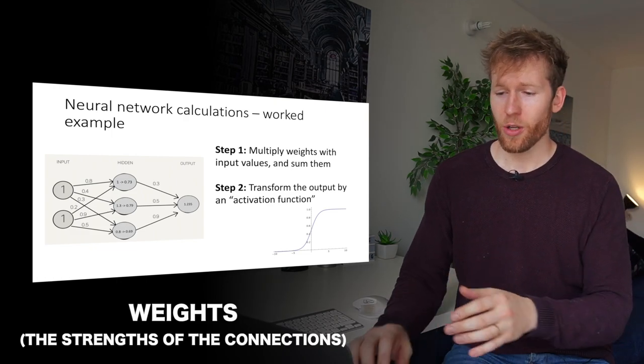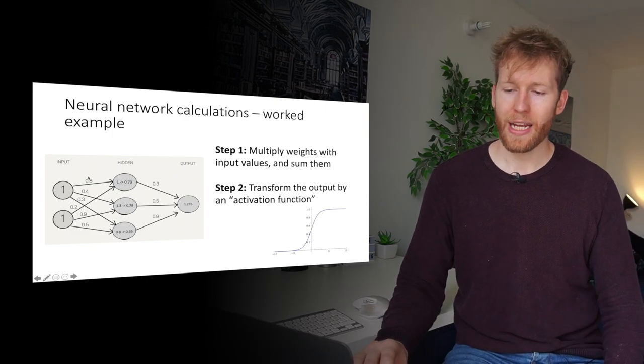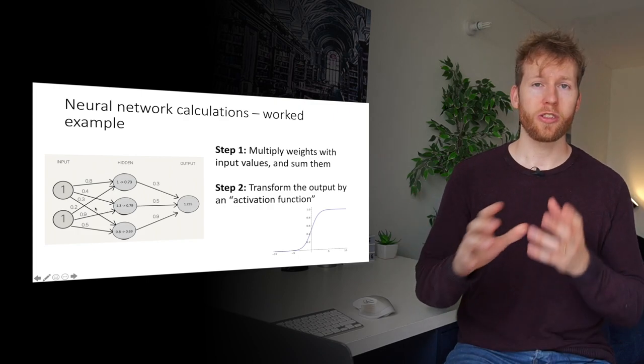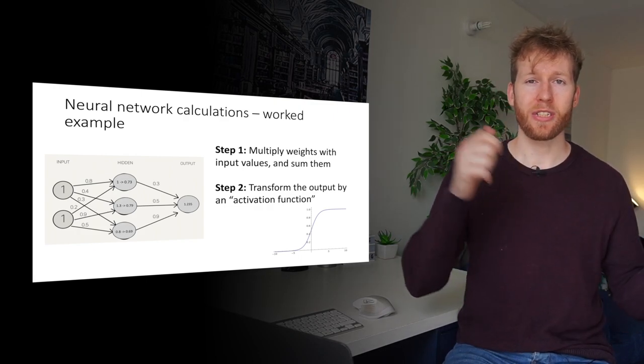So that's how neural networks work, but before they actually perform the task we need to train them. The way that we train it is we update the weights. We want to update these values of 0.8, 0.4, 0.3, etc. We want to change those so that we get the best mapping of inputs to outputs.